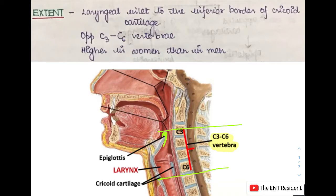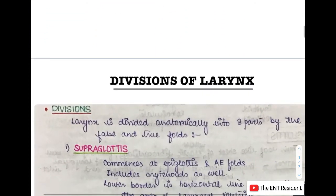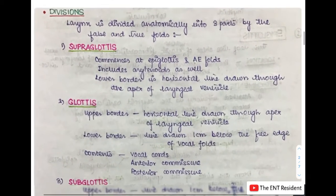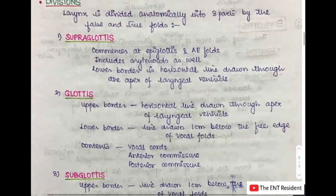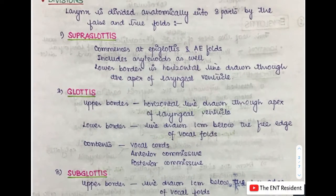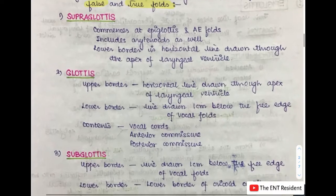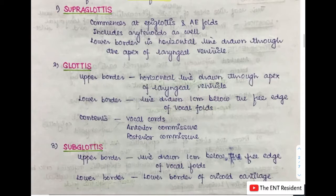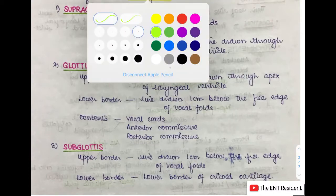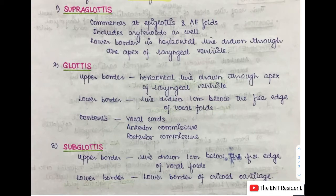Next we will discuss how we divide the larynx into different parts. We divide the larynx anatomically into three parts by two particular structures: the false chord and the true chord. The three different parts of larynx are the supraglottis, glottis, and subglottis. The supraglottis commences at the level of the epiglottis and aryepiglottic folds, also known as the AE folds.